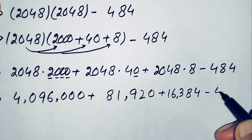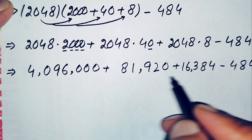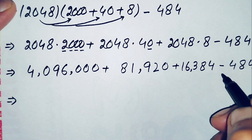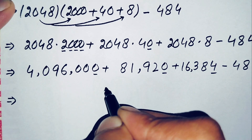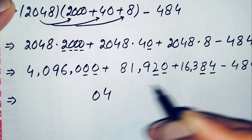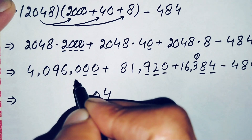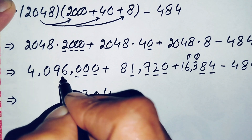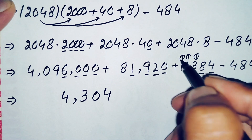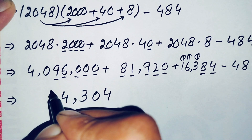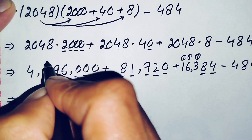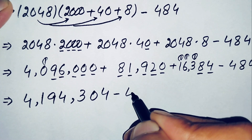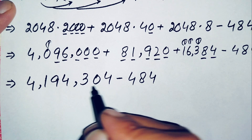So we now have 4,096,000 plus 81,920 plus 16,384 minus 484. We add the three numbers: ones place 4 plus 0 plus 0 is 4; then 8 plus 2 plus 0 is 10, write 0 carry 1; then 3 plus 1 plus 9 plus 0 is 13, write 3 carry 1; then 6 plus 1 plus 1 plus 6 is 14, write 4 carry 1; then 9 plus 1 plus 8 plus 1 is 19, write 9 carry 1; next 0 plus 1 is 1 — giving 4,194,304.